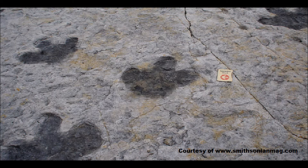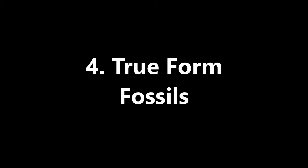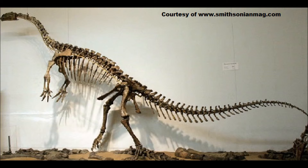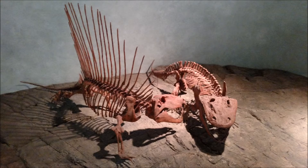So that brings us to our fourth kind of fossils, called true form fossils. These are the cream of the crop of fossils out there. That is because true form fossils are the actual animal itself — it's the anatomical parts of the animal. It's a leg bone or an arm bone, or heck, a bug trapped in amber. Oh, Jurassic Park.